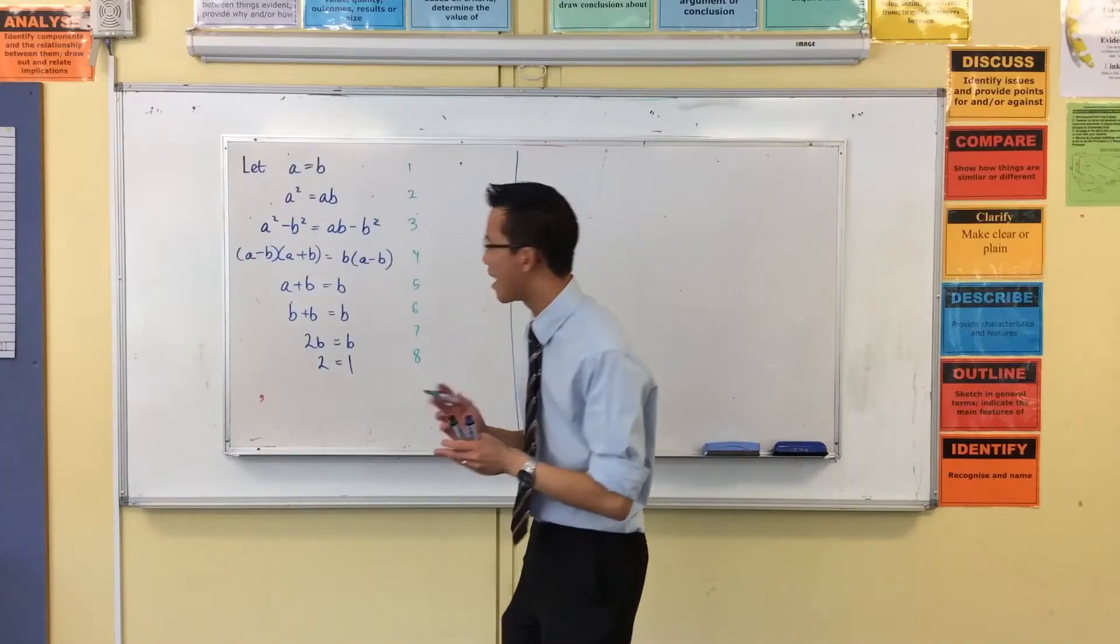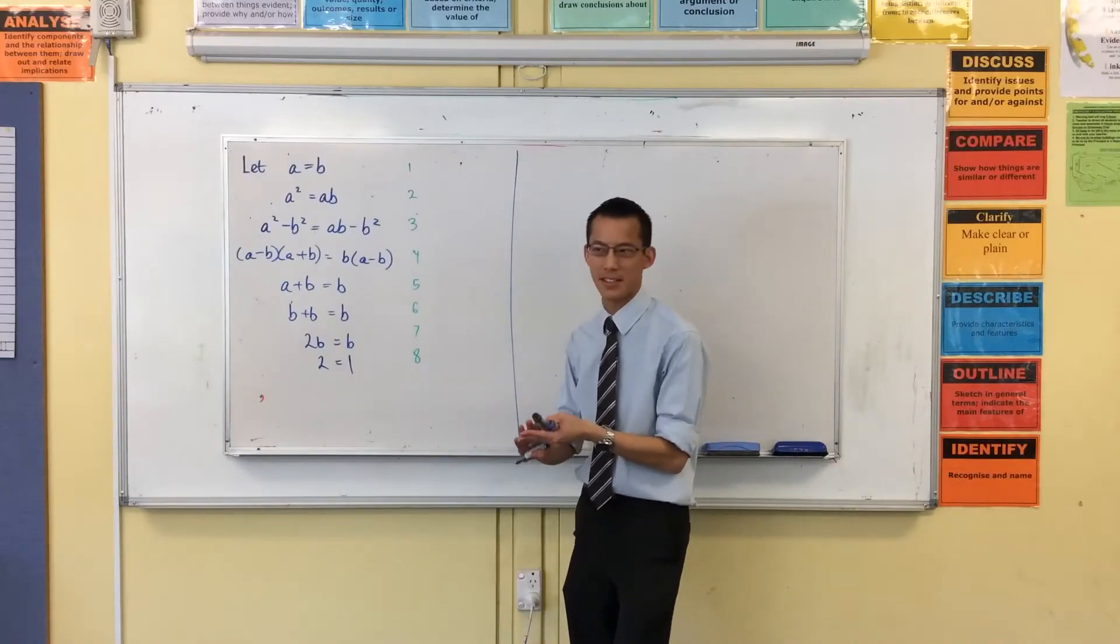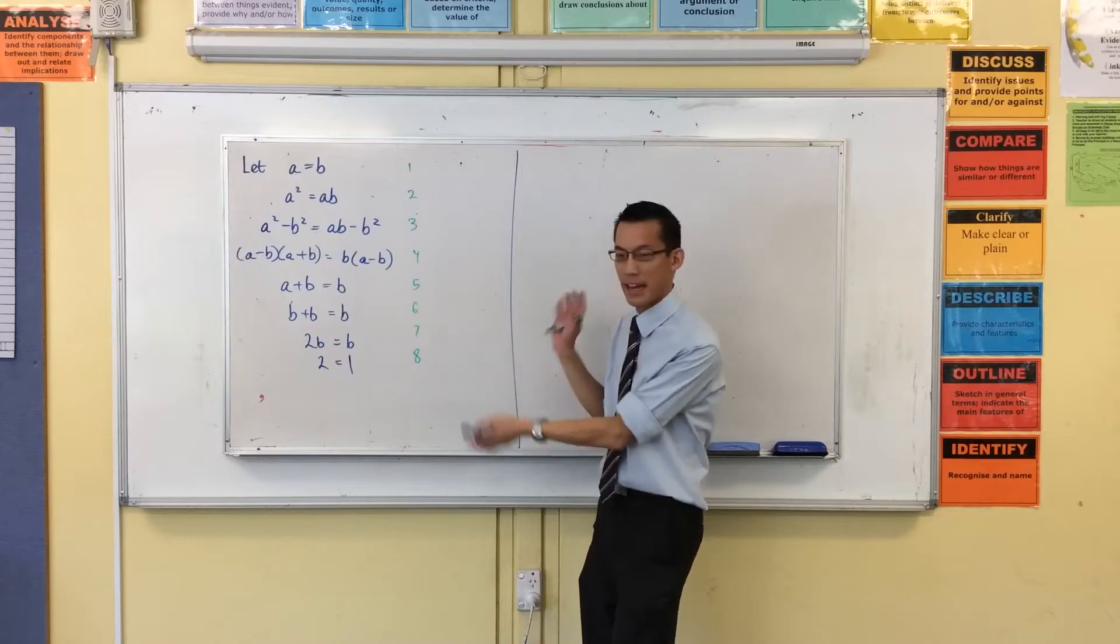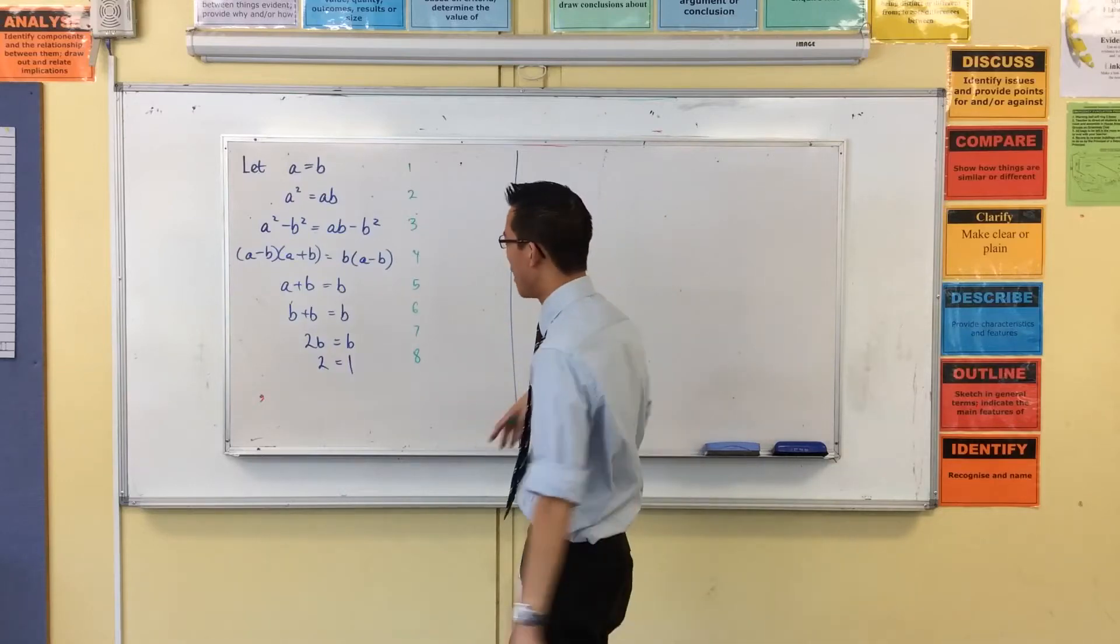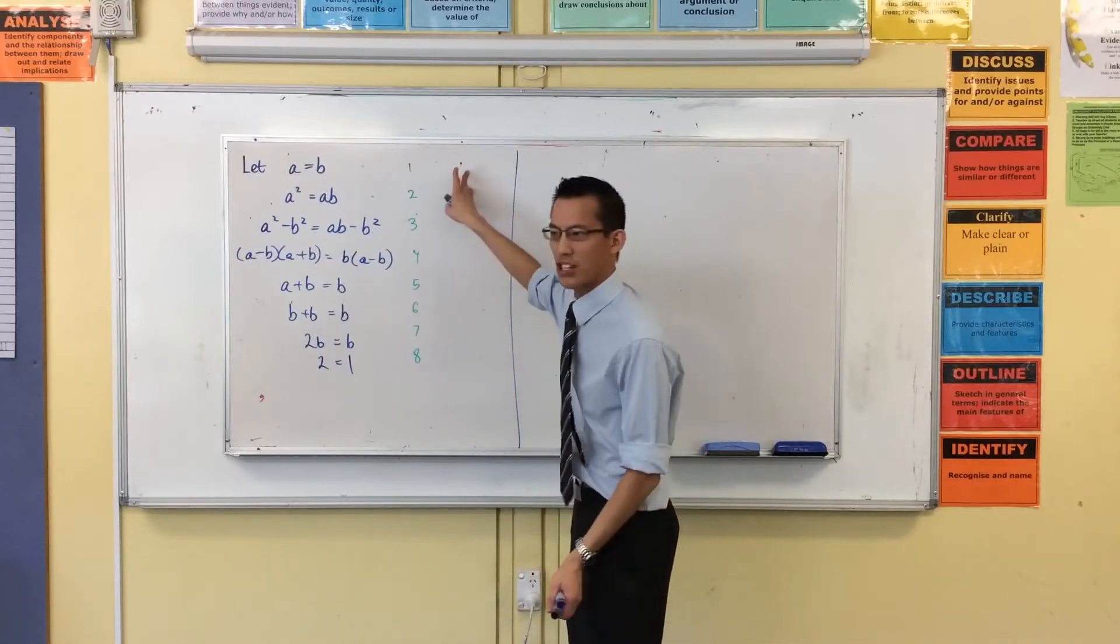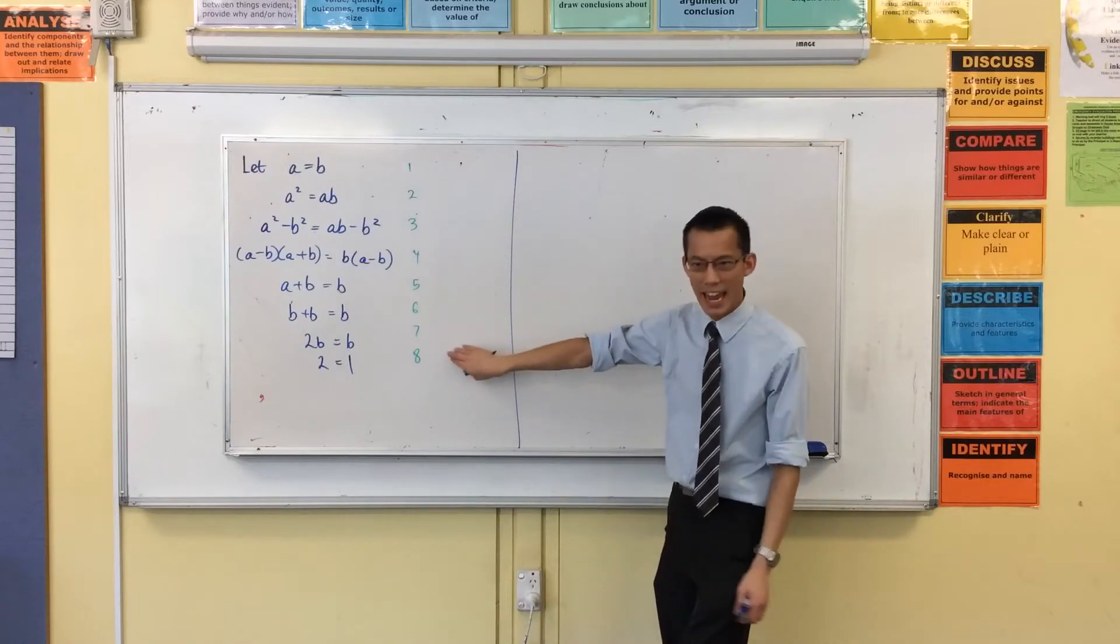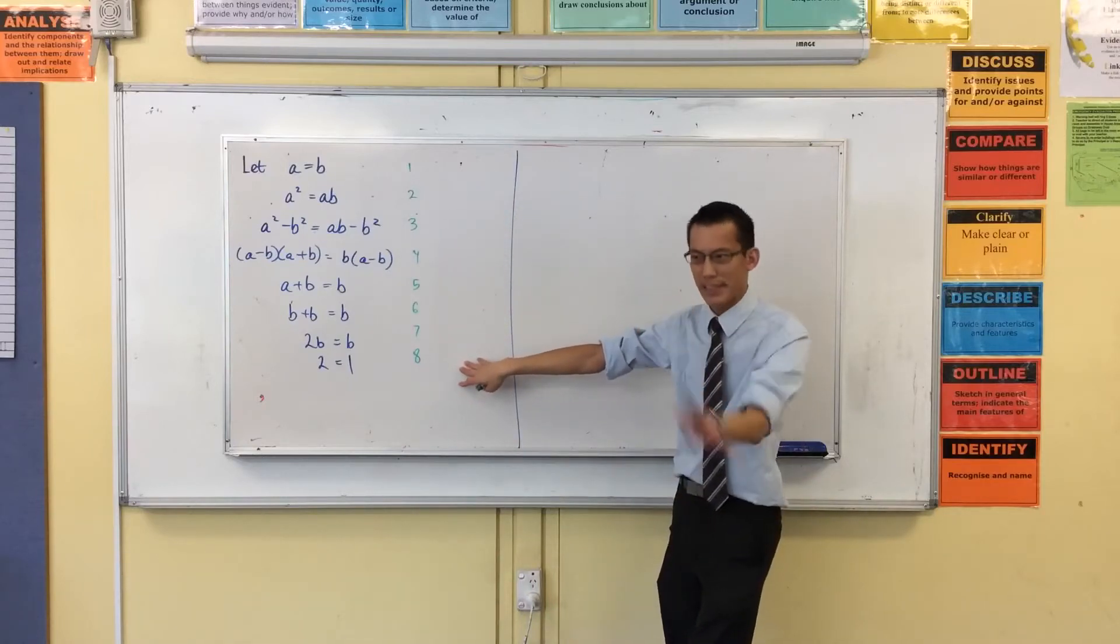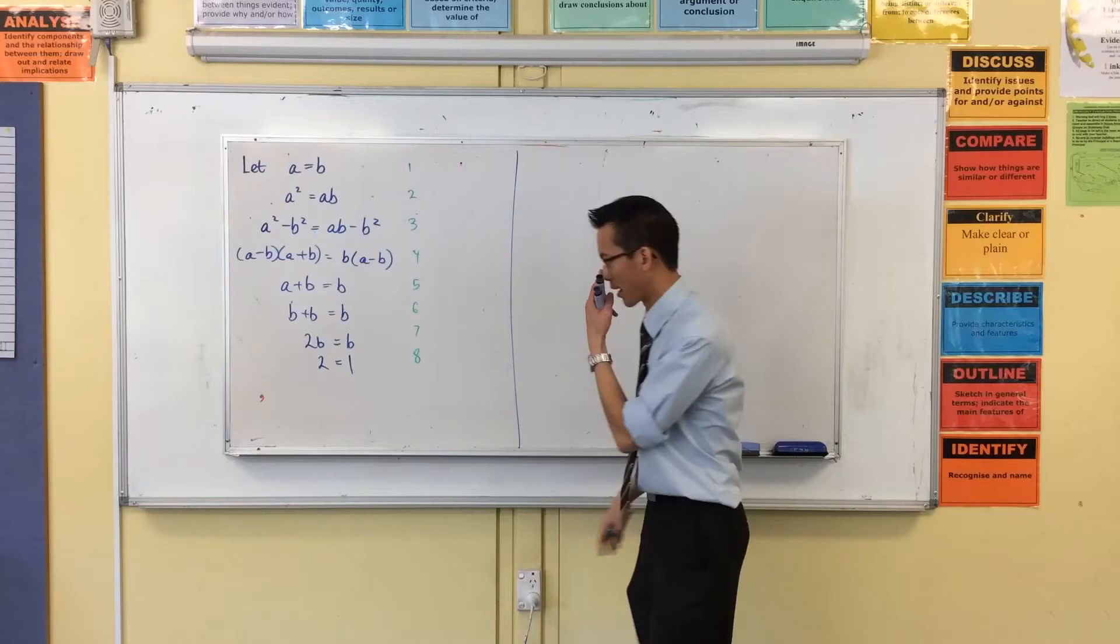Alright, so we looked at four fallacies last time, four mathematical results that are paradoxical because they seem to hold together logically, but then when you get to the end, you get something which is completely bogus and doesn't make any sense at all.